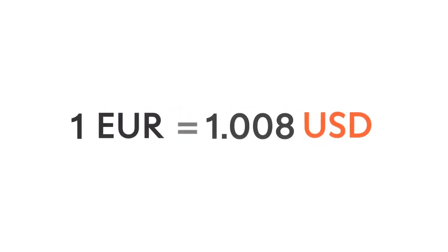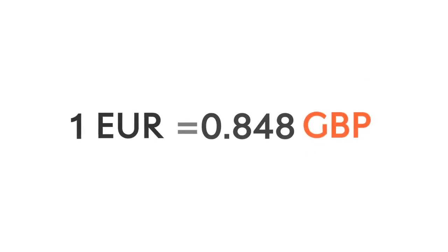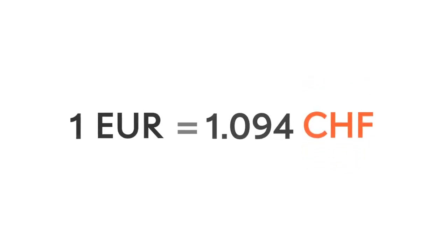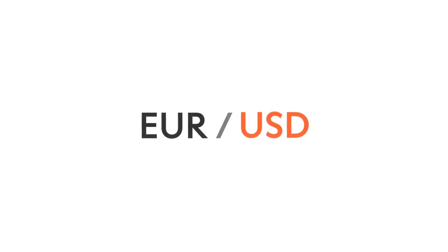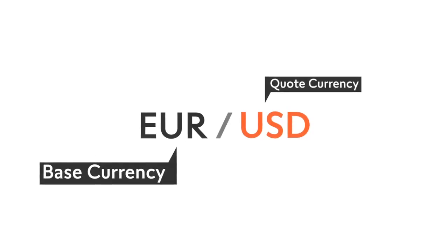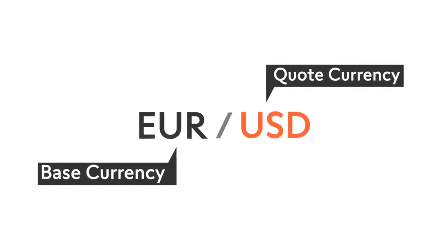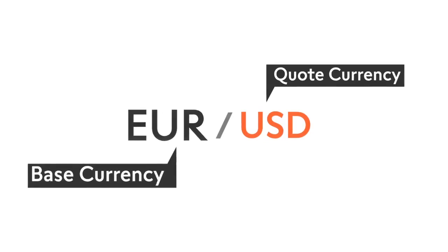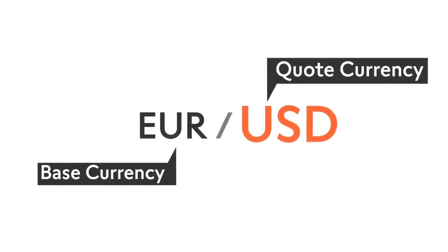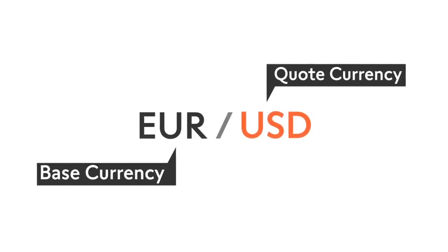When you trade Forex, you trade one currency for another. Since their value is rarely one to one, the currency amounts are different. This reflects the exchange rate. Any two currencies involved in a Forex trade are called a currency pair. The value of the first currency, the base currency, is shown in terms of the other currency. The base currency is what you buy or sell, and the quote currency shows how much you will pay or receive.